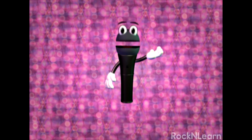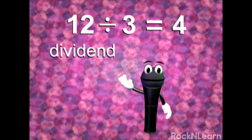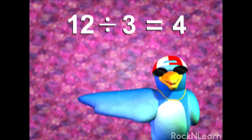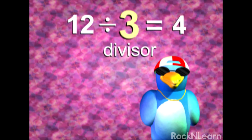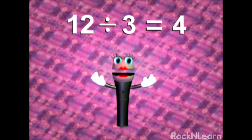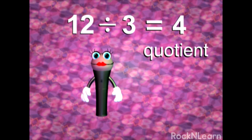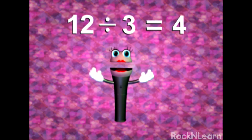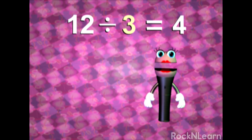The parts of a division problem have special names. The number you are dividing is called the dividend. In this example, 12 is the dividend. The number you are dividing by is called the divisor. So in this example, the divisor would be... 3. The answer to a division problem is called the quotient. In this problem, the quotient would be... 4. When checking your answer to any division problem, you can multiply the divisor by the quotient, or the quotient by the divisor, and it will equal the dividend.